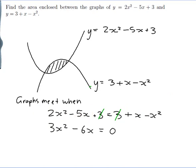And I'll get minus 6x and that will be equal to 0. I can pull a 3 out and an x out and I'll be left with x take 2. So x is equal to 0 or 2. That's when the graphs meet.